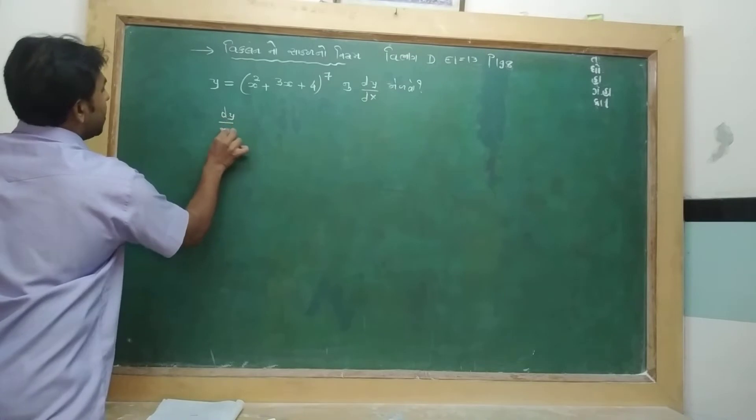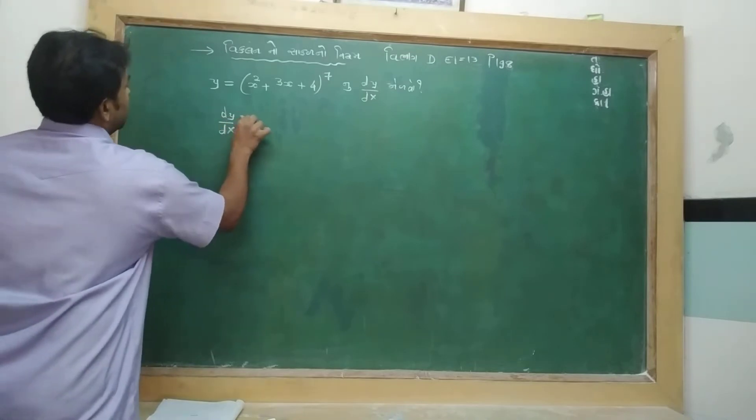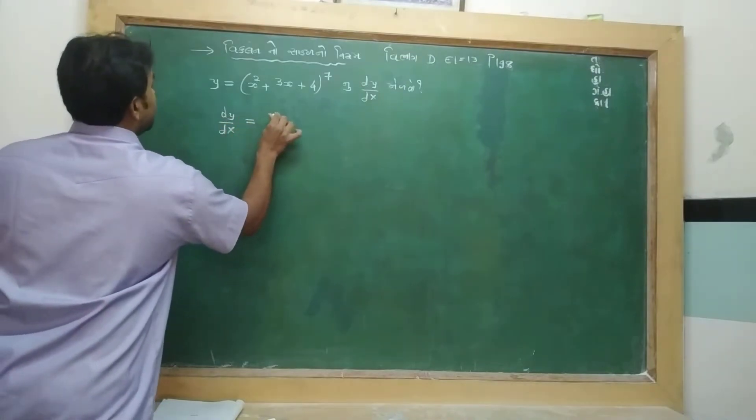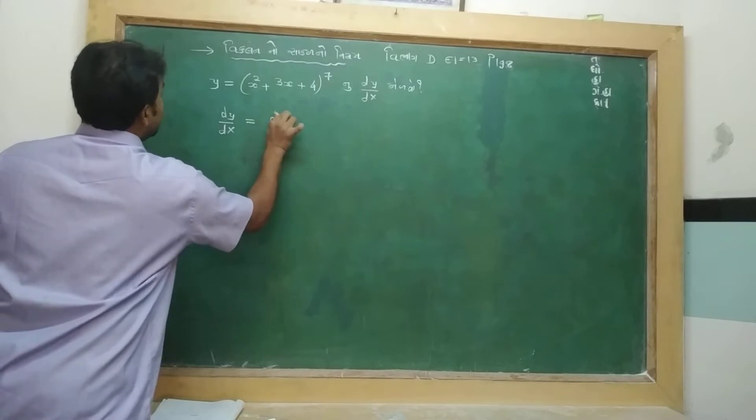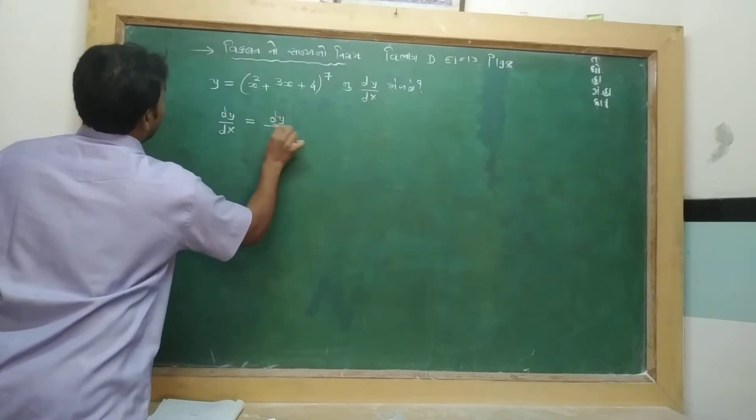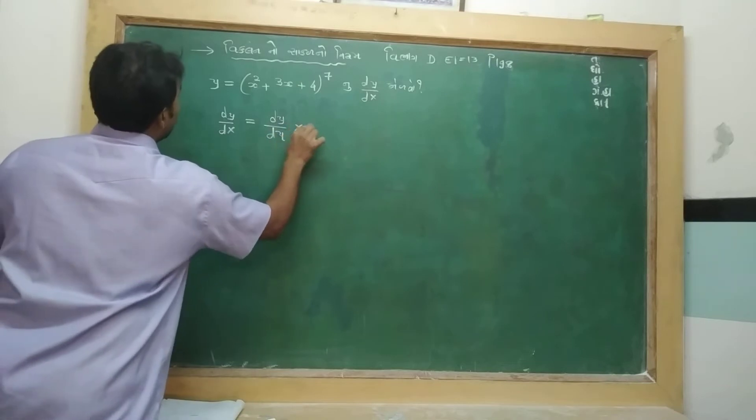And dy divided by dx is equal to... dy divided by du equals...